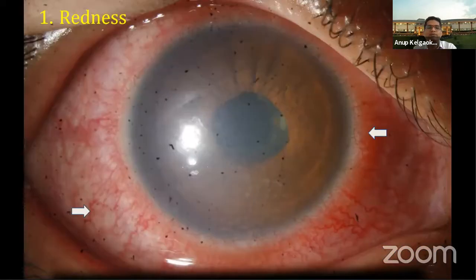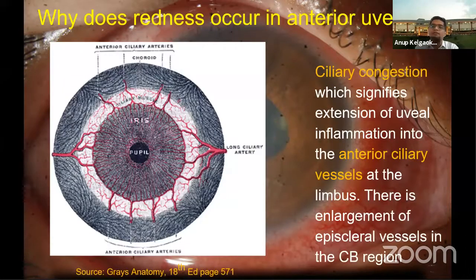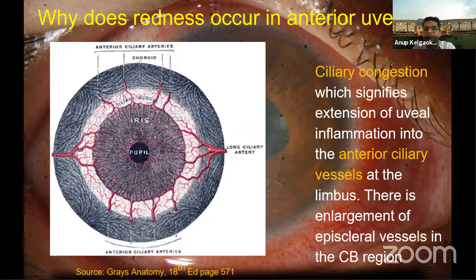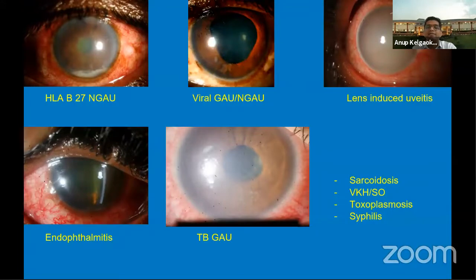Let us go through symptoms one by one. Redness is by far the most commonly known symptom of uveitis. It occurs in two types: ciliary or circumciliary congestion, and conjunctival congestion. When inflammation spreads to the anterior ciliary vessels, we get profound redness or conjunctival injection around the bulbar conjunctiva. This red eye can be seen in various anterior uveitides including HLA-B27-associated, viral, lens-induced uveitis, infectious conditions like endophthalmitis, tuberculosis, and many others.